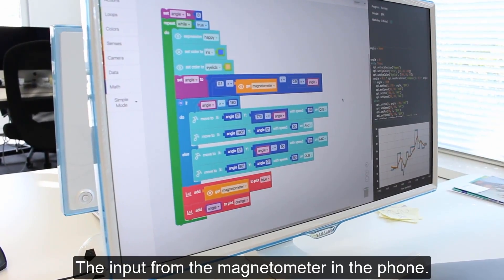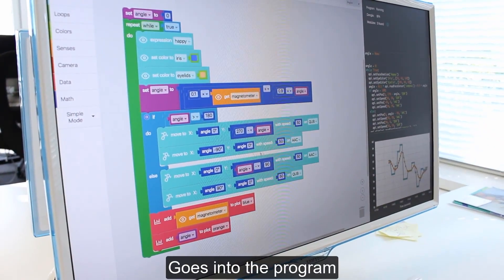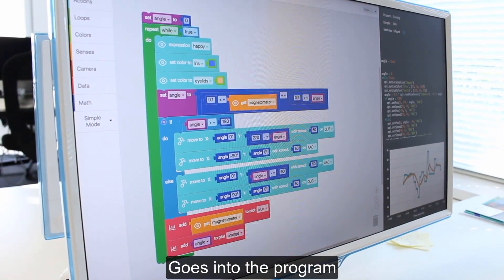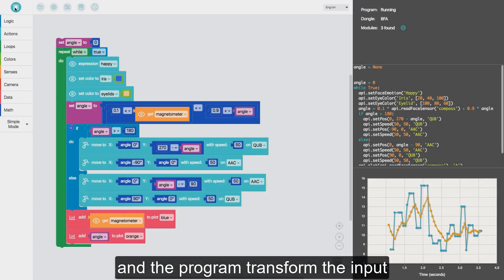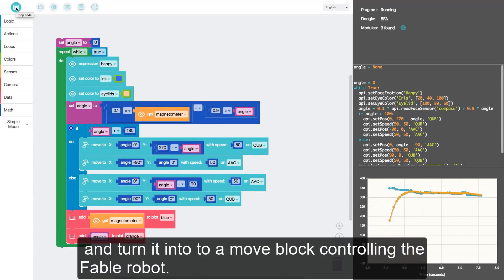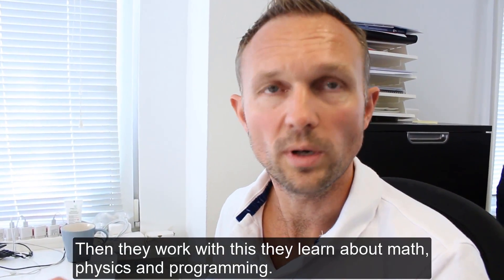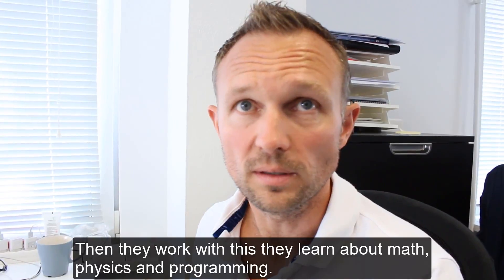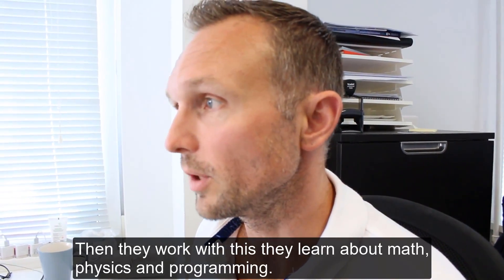The input from the magnetometer in the phone goes into the program and then it transforms the input and turns it into a move block here in the Fable robot. So when they work with this, they learn about math and physics and they learn about programming.